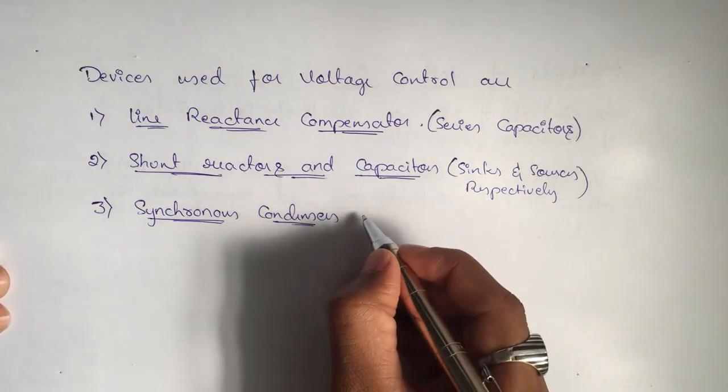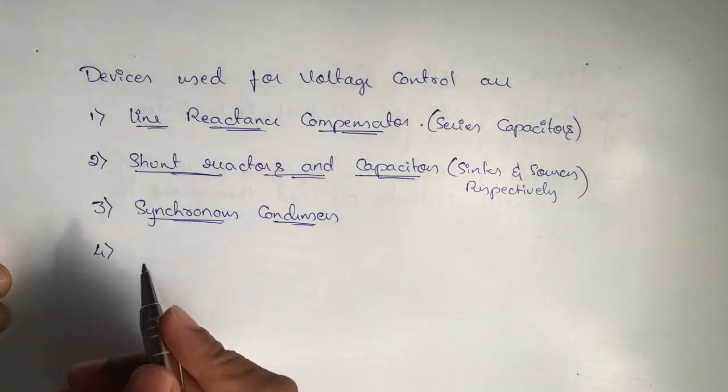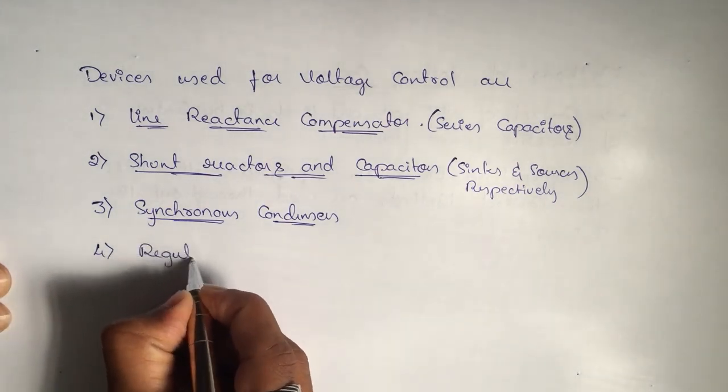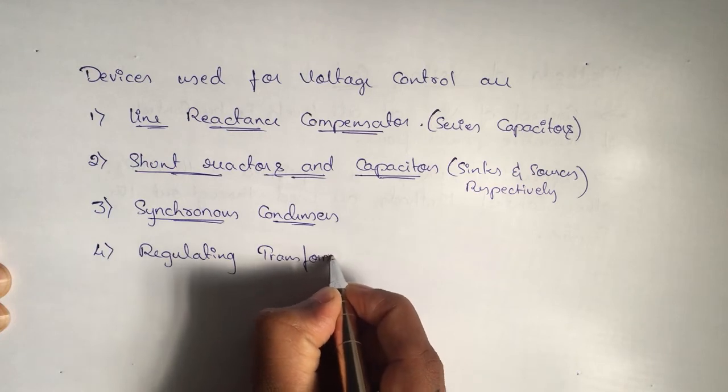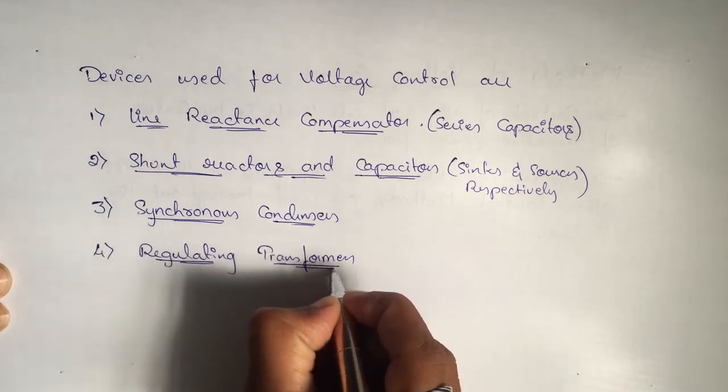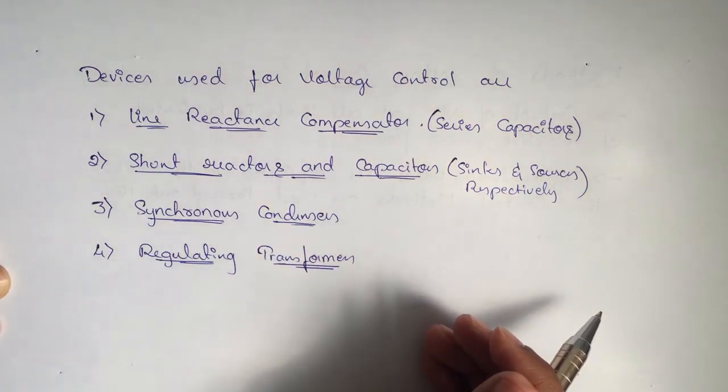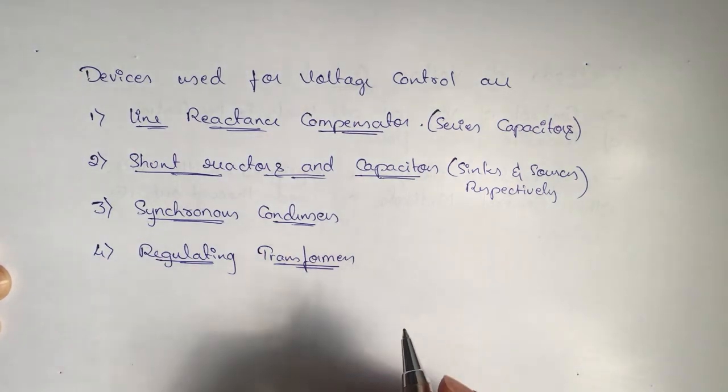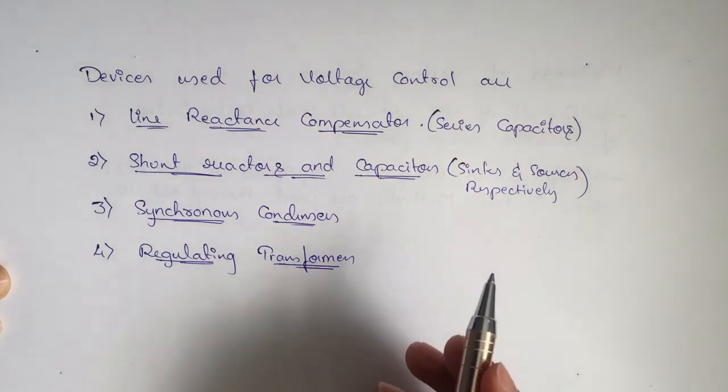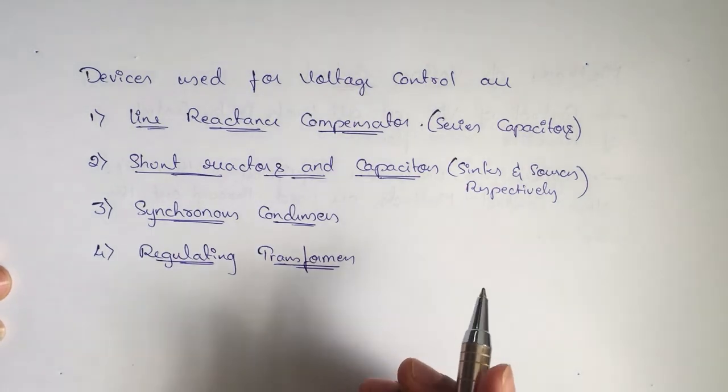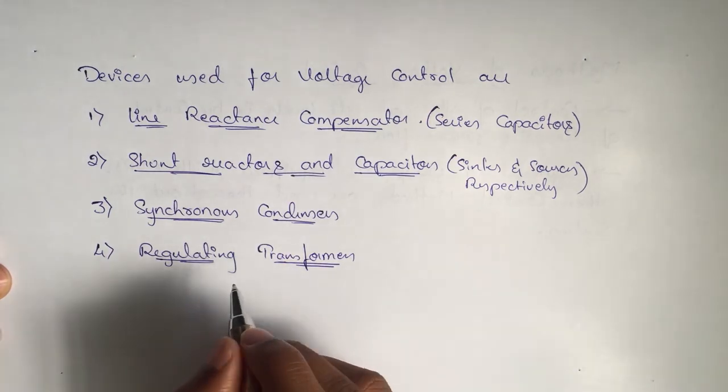Next component is regulating transformers - regulating transformers like tap-changing transformers and boosters. These are all used for voltage control to step up the voltage or to step down the voltage. Sometimes we even boost up the voltage from a specified level to higher values. That's why we use regulating transformers.